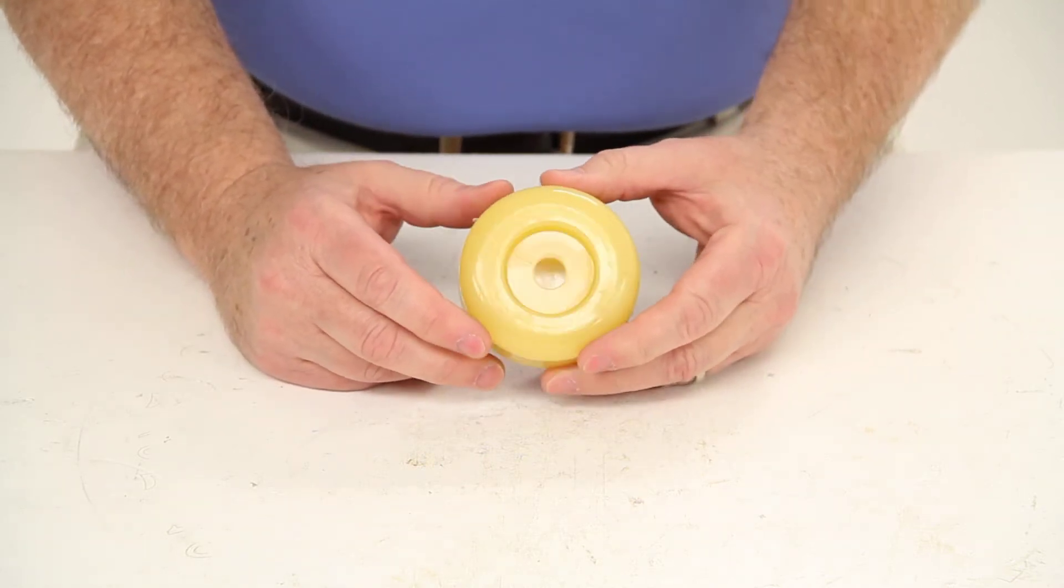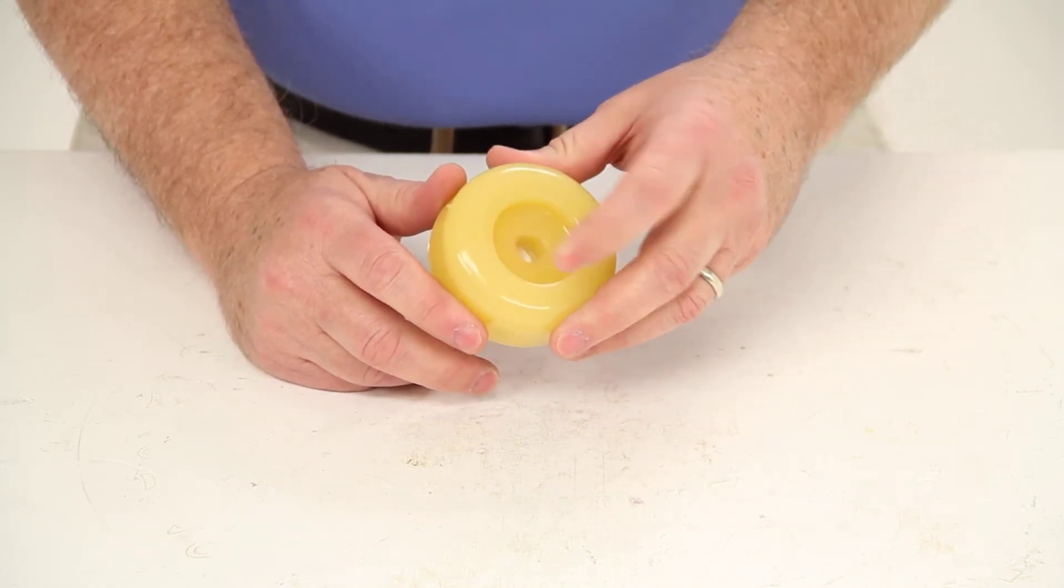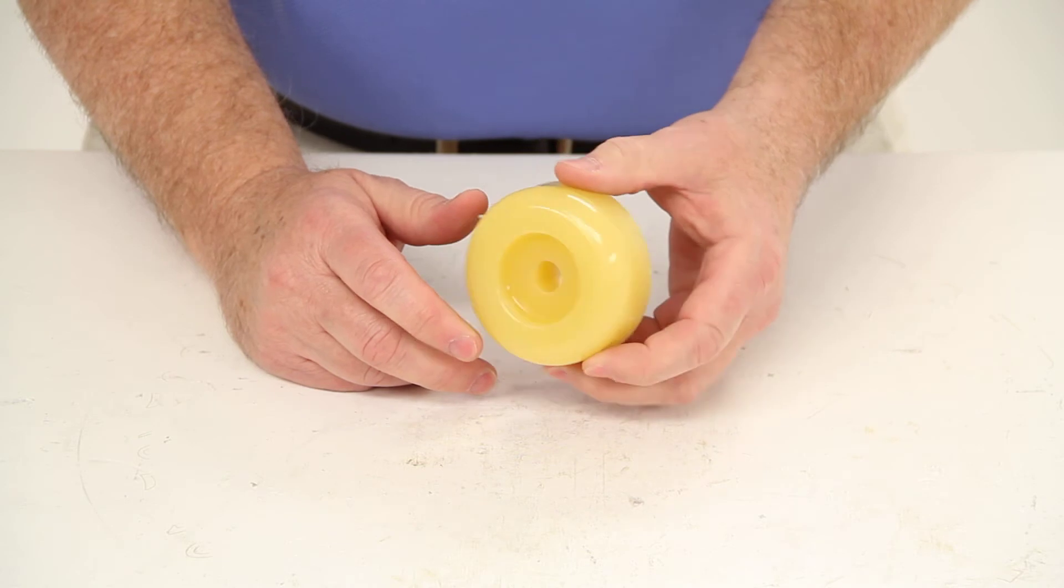These end caps will provide more surface area for better boat to trailer contact, and they'll also keep your boat from being scratched by sharp bracket edges.